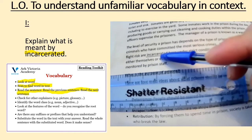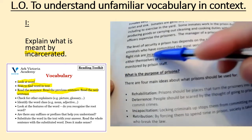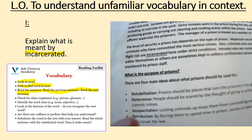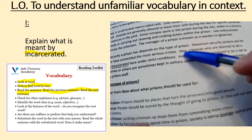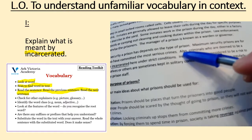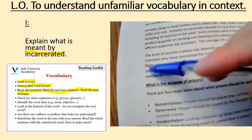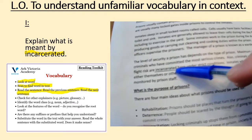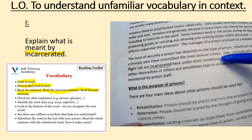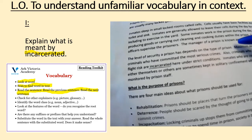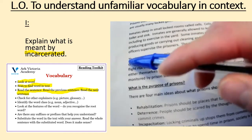So I'm going to start by reading this sentence. I'm going to trace my finger back until I get to the beginning of the sentence, and now I'm going to read it aloud. Also, criminals who are deemed to be a flight risk are incarcerated here under strict conditions. I'm still not sure what incarcerated means having read the sentence. So I'm going to read the previous sentence — in fact, I'm going to read the entire paragraph because there's only one previous sentence before that.